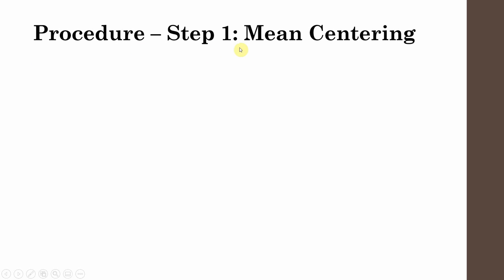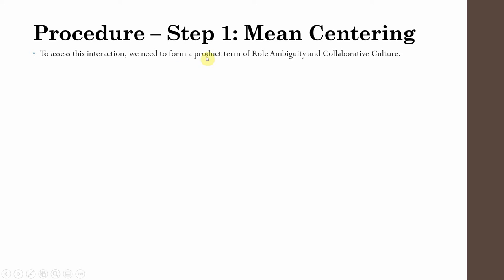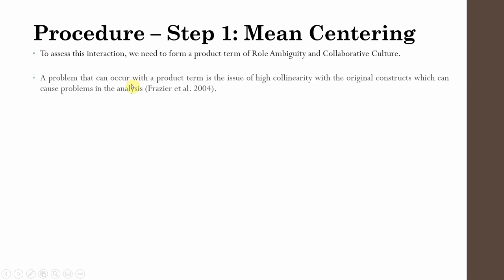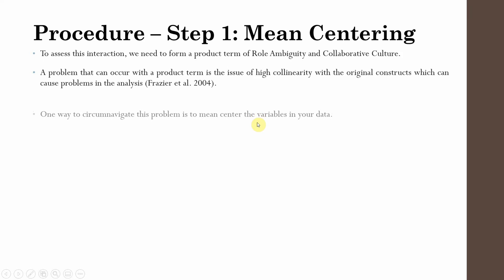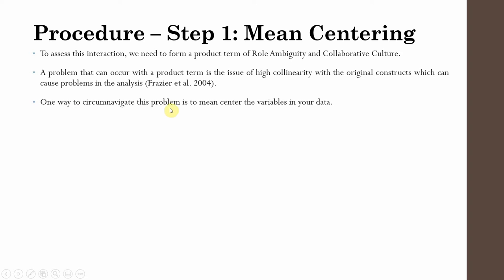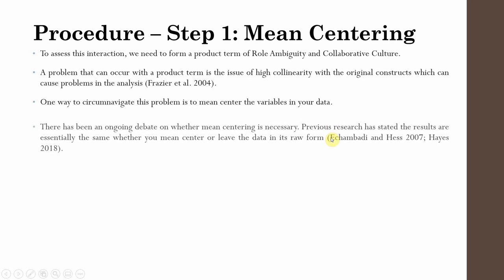We need to see how the interaction of collaborative culture and role ambiguity influences organizational performance, so we will create an interaction of those two variables. The first step is mean centering. To assess this interaction, we need to form a product term of role ambiguity and collaborative culture — that is, the interaction of the moderator and the independent variable.